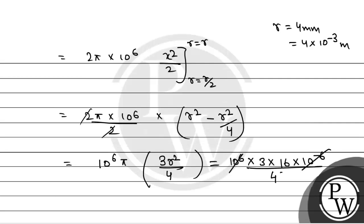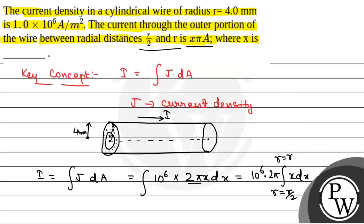This simplifies to 12π. Since the answer is xπ ampere, we have 12π = xπ. Therefore x is equal to 12. So the value of x is 12, and this is the final answer.